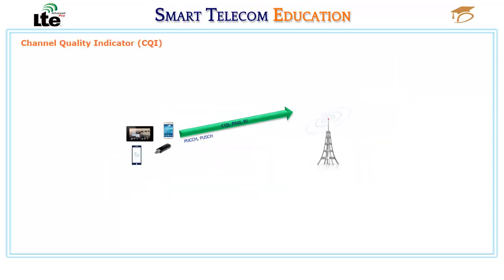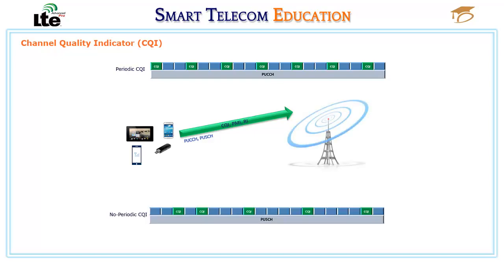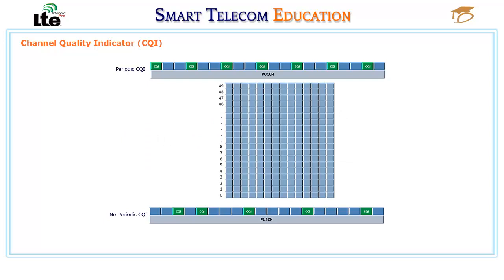The UE reports the CQI to support the various transmission modes available to them. The UE reports their feedback to the E-NodeB periodically on PUCCH, or aperiodically on PUSCH. The CQI feedback can be wideband, referring to the entire spectrum, or subband CQI, which applies to each subband in a frequency-selective mode.